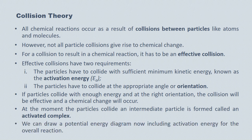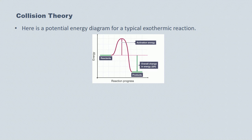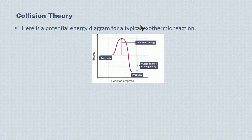We can draw a potential energy diagram and modify it to include the activation energy for the overall reaction. Here is what a typical potential energy diagram would look like for an exothermic reaction. The reactants are higher in potential energy and the products are lower in potential energy, so energy has been lost to the surroundings — this is an exothermic reaction. The new piece is the hump we see in the middle: this purple hump that starts at the reactants' energy level and goes up in potential energy before coming down to the potential energy of the products.